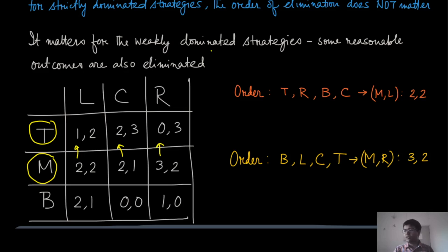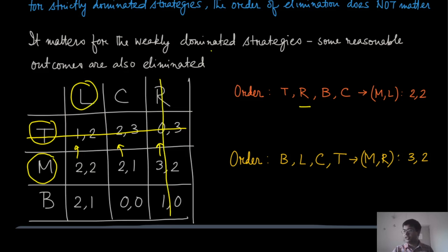There are many dominated strategies you can identify. In one order, eliminate T first. Then in the reduced game, R is also dominated by L, so remove R. Then B is dominated by M, so remove B. And finally remove C for player two. You are left with only the outcome (2, 2), that is M comma L — the final predictable outcome when removing weakly dominated strategies in this order.